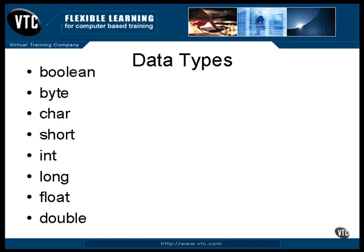In Java, when you declare a variable, it always has an initial value assigned to it. If you don't assign one, the system does. Briefly, all numeric values are zero, characters are null, and boolean values are false.